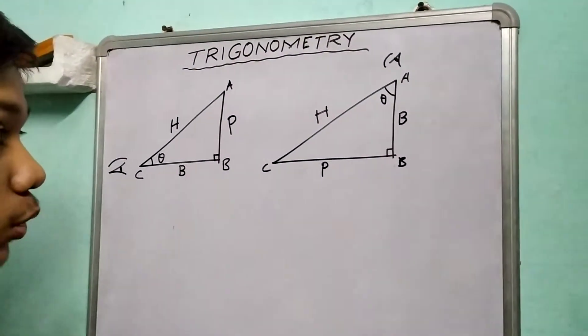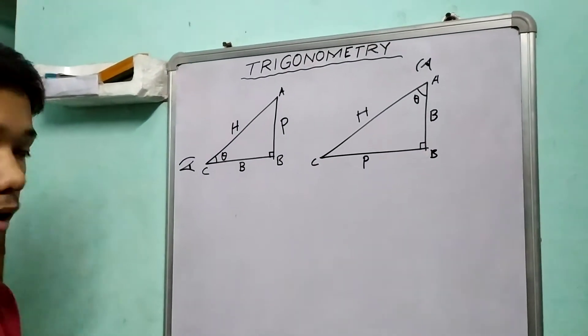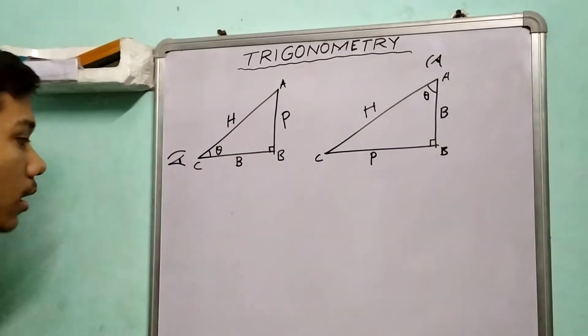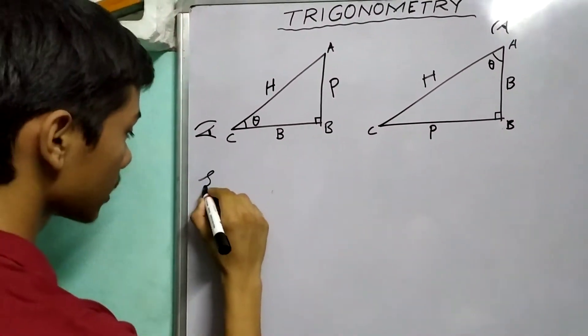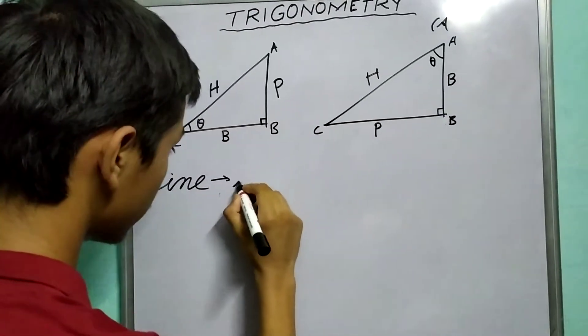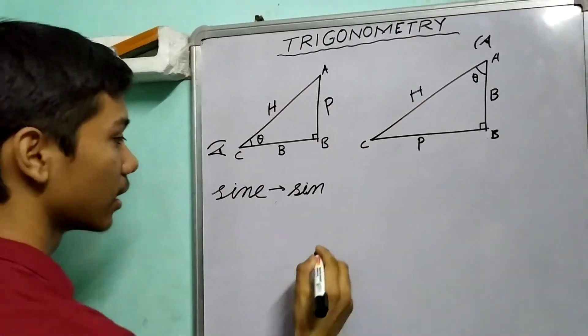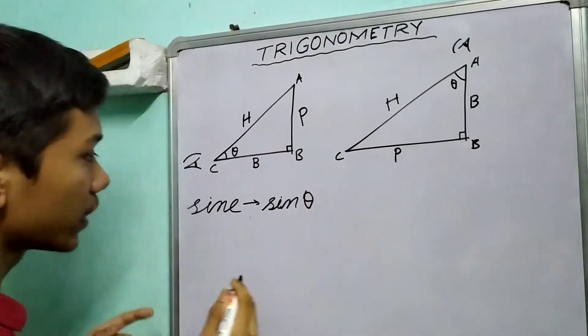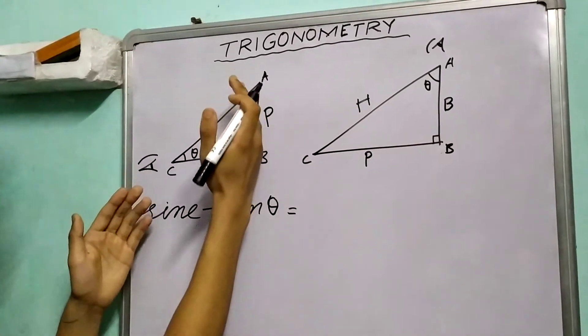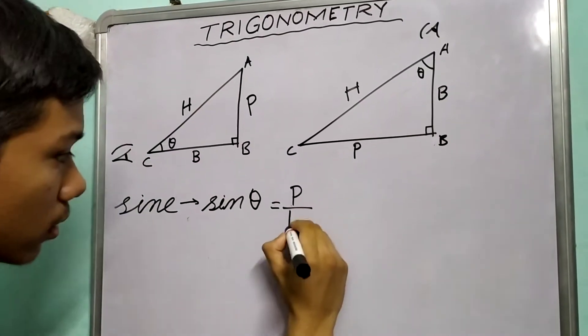So now that we are done defining what our perpendicular base is with respect to an angle, let us now look at our trigonometric ratios, the sine, cos, tan, and so on. Our first trigonometric ratio is sine, S-I-N-E, abbreviated as sin. We still pronounce it as sine. So sine of some angle, sine of theta, is defined to be the perpendicular P divided by H.